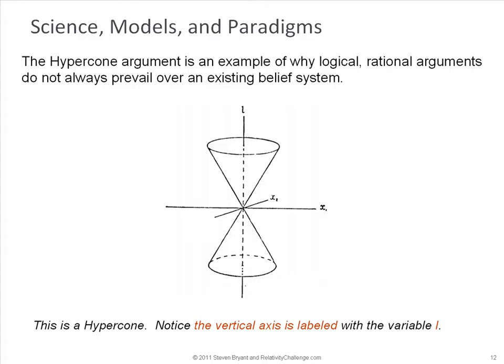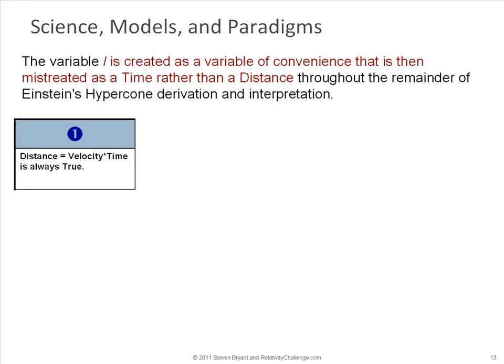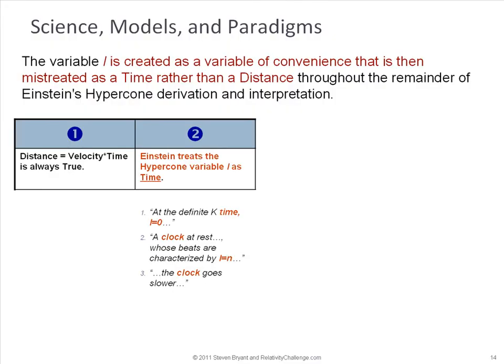We're going to look at an illustration of Einstein's hypercone. And in this case, the only thing I want to point out is the vertical axis, which is labeled L. That's the one axis we want to understand. Now, first, in order to understand this, we need to anchor ourselves in something that we know is true. Distance equals velocity times time. Now we look at Einstein's work.